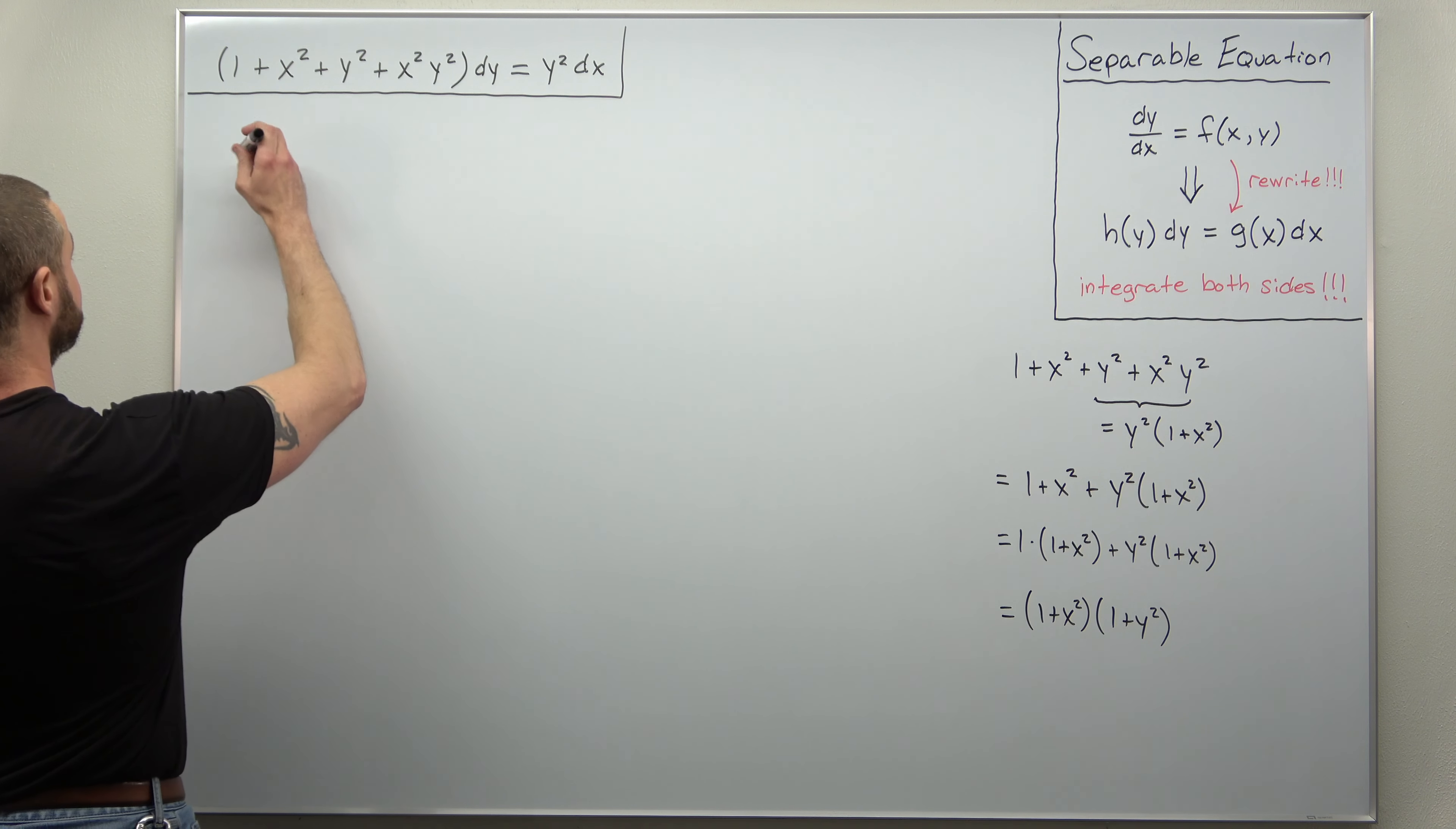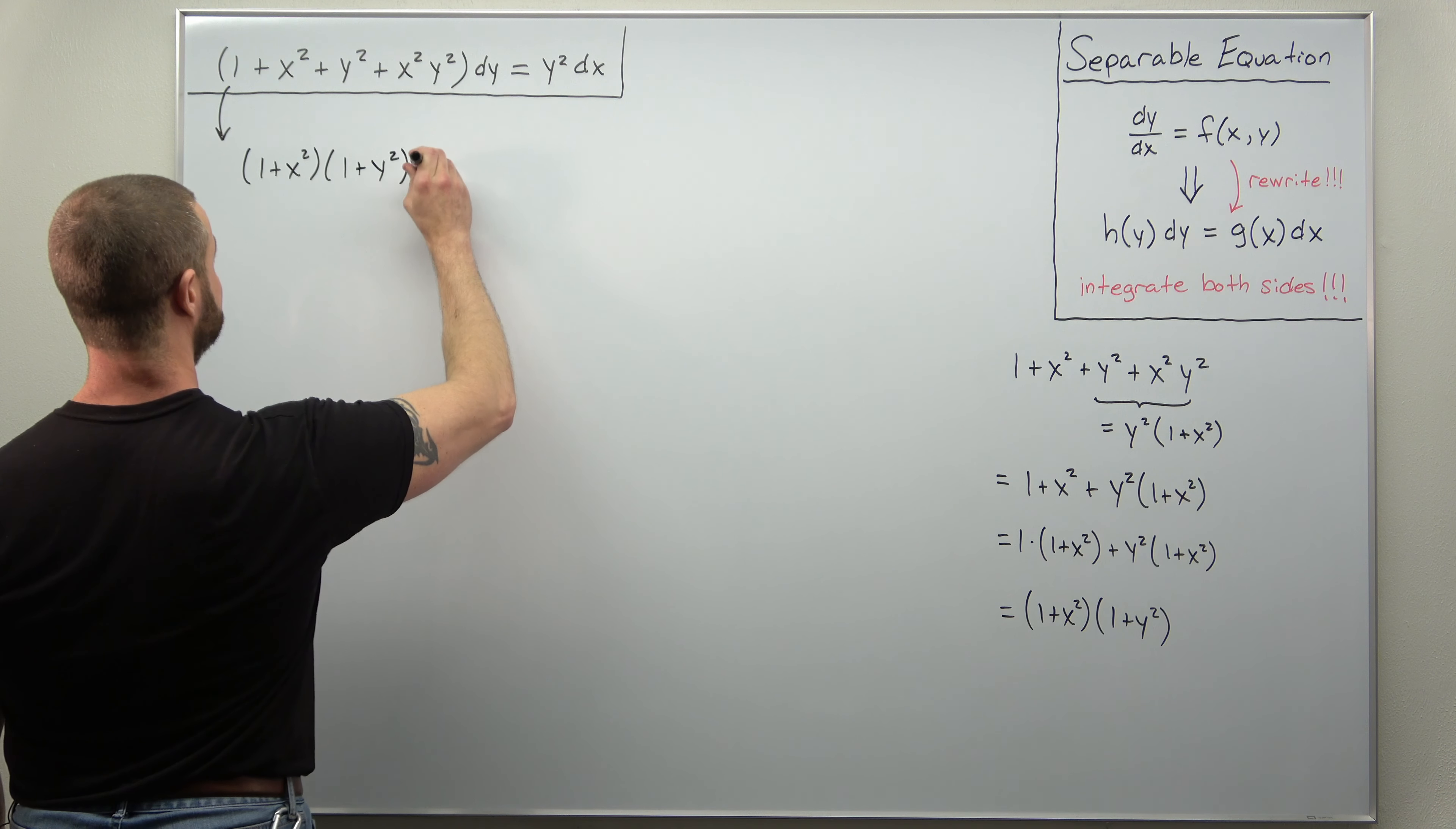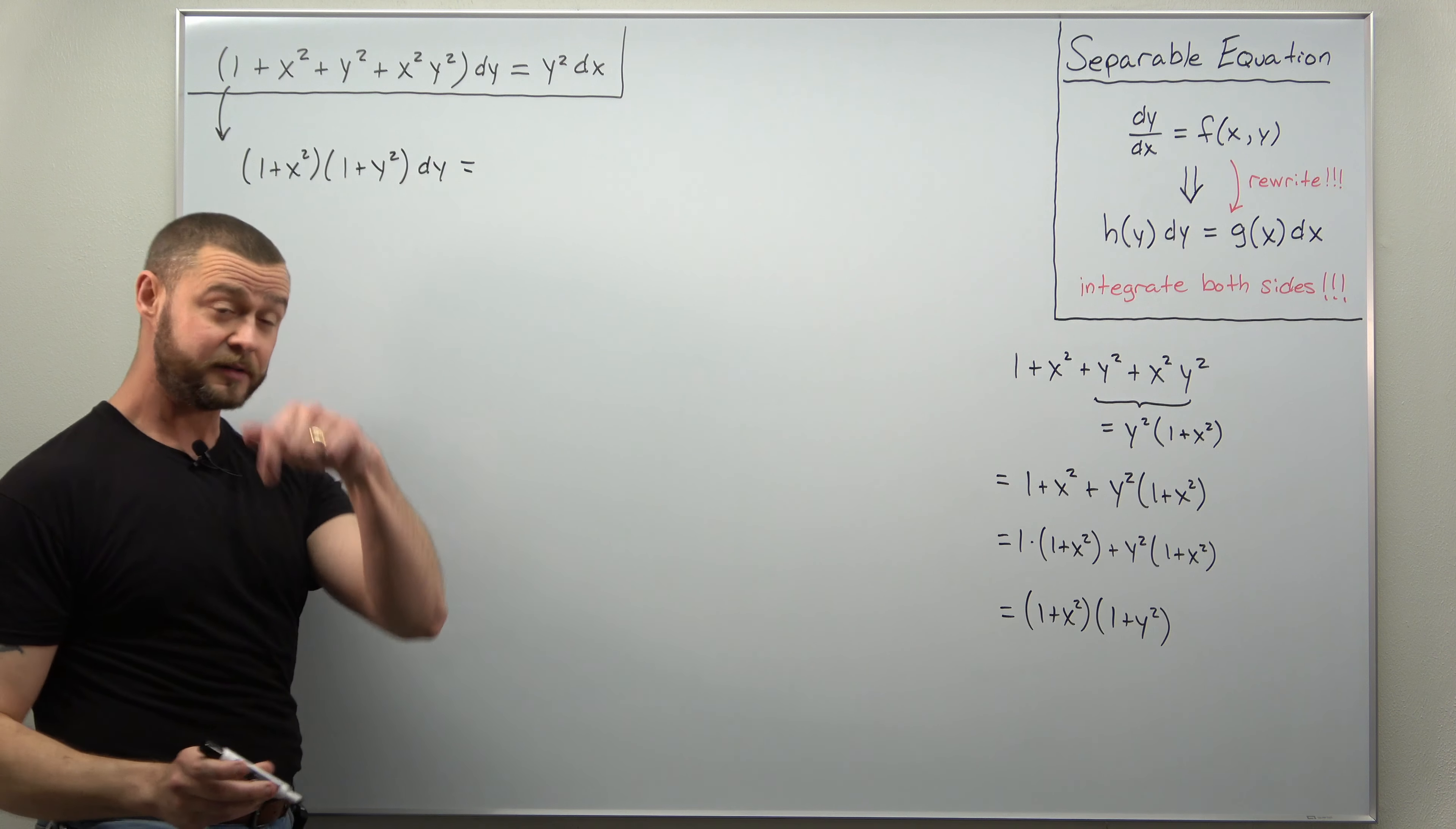So that was our left side, let's just go ahead and rewrite that and continue. We had this factored as 1 plus x squared times 1 plus y squared, that's multiplying dy, and we haven't done anything with the right side. We're going to leave that right now as y squared times dx.